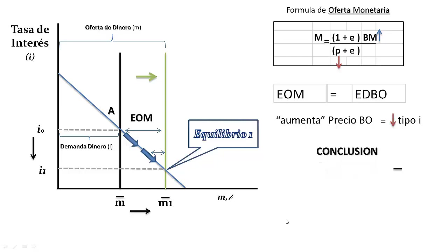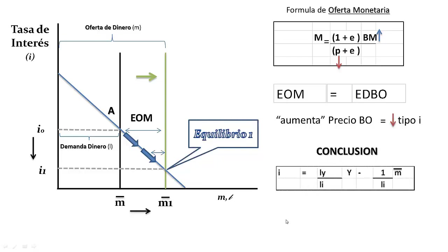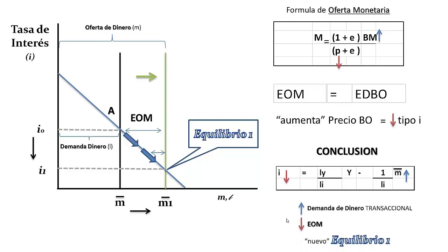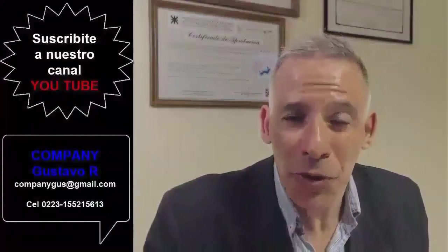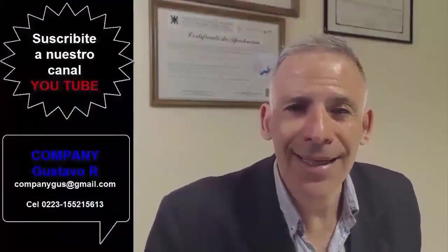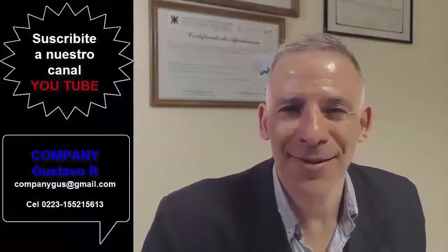Como conclusión, al igualar la demanda y oferta de dinero llegamos a la fórmula en la cual se cumple que si aumento la oferta monetaria, disminuirá el tipo de interés, por lo que será menos atractivo tener bonos, aumentando la demanda de dinero por motivo transaccional, lo que hará disminuir la oferta monetaria, logrando un nuevo equilibrio. Si te gustó, suscríbete al canal de YouTube para enterarte de nuestros próximos videos. Muchísimas gracias.